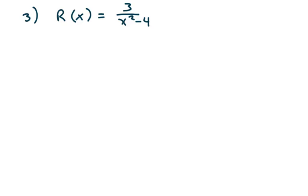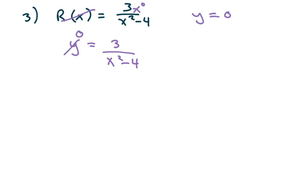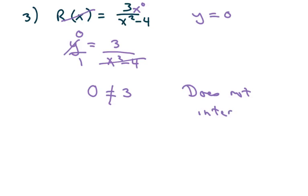Here the degree in the numerator — we can call it 0 — is smaller than the degree in the denominator, so the horizontal asymptote is Y equals 0. Set the equation equal to 0 and cross multiply. The 0 over 1 cancels out and you get 0 equals 3, which doesn't make sense. So it does not intersect the horizontal asymptote.